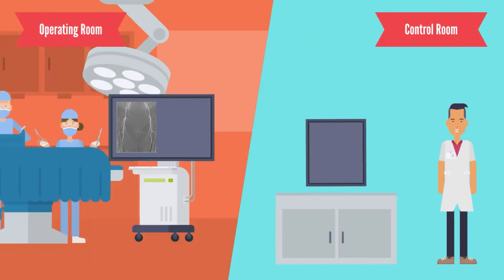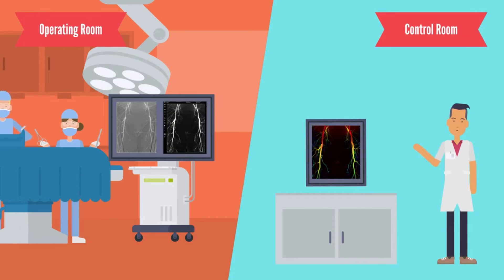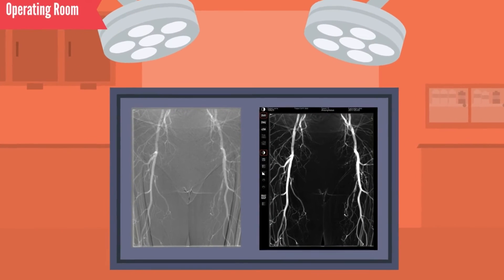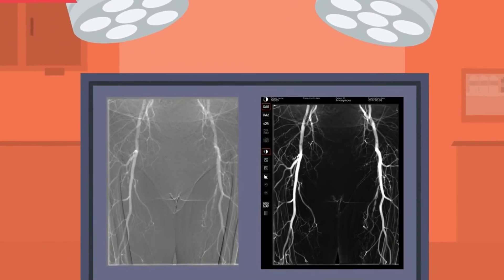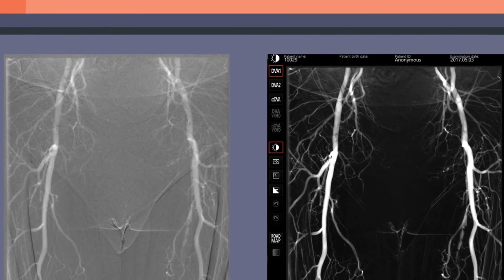The whole process takes about 1.5 seconds after the medical doctor steps off the foot switch. Practically speaking, the DBA image can be seen instantly in the operating room next to the DSA image. You also have the opportunity to modify the image in the operating room.